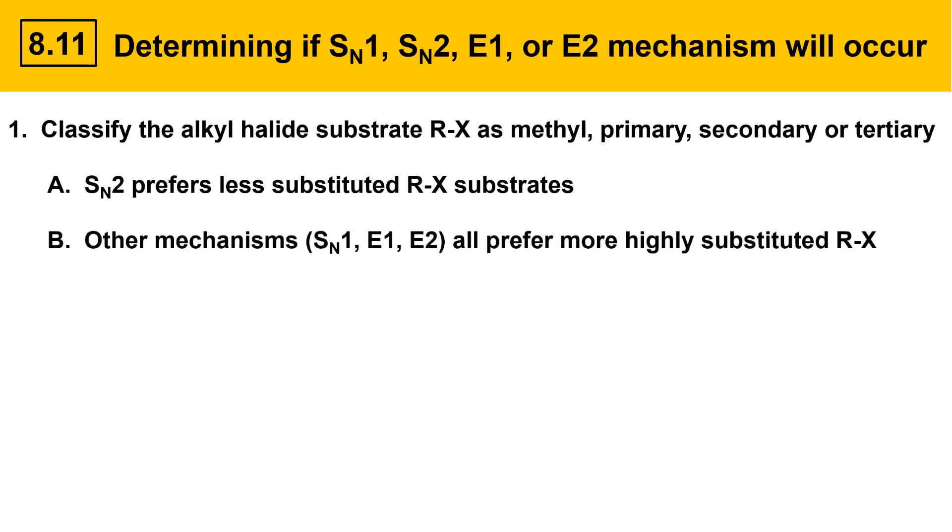Other mechanisms, the SN1, the E1, and the E2, all prefer more highly substituted alkyl halide substrates. So, based on substitution, you can get a sense of which types of reactions are more or less likely.